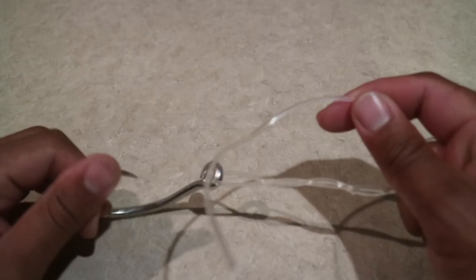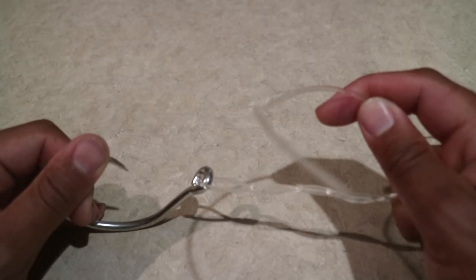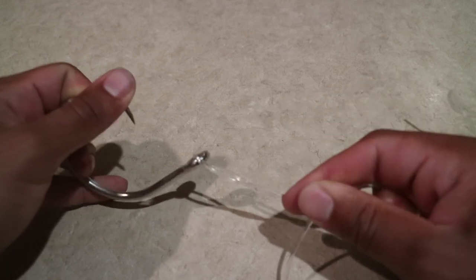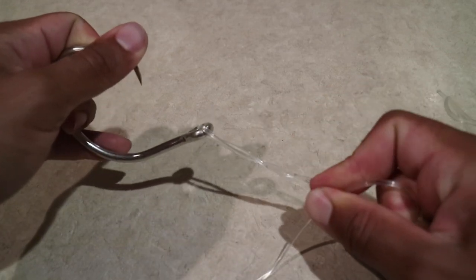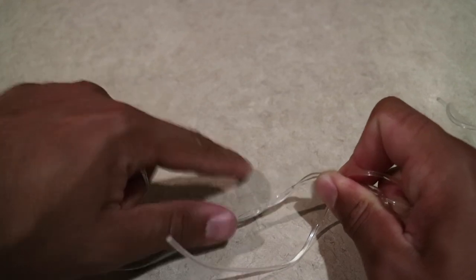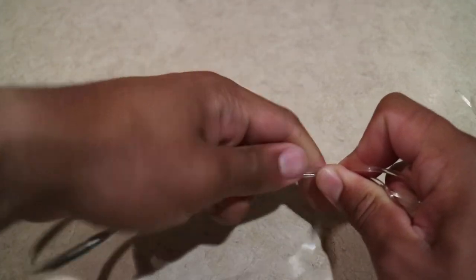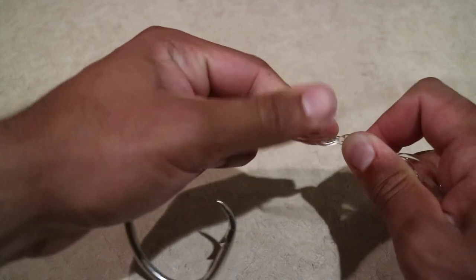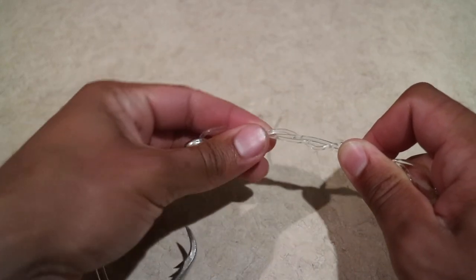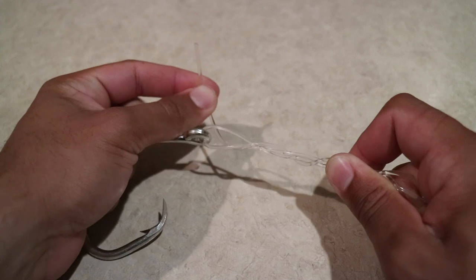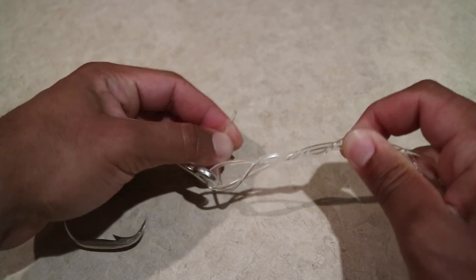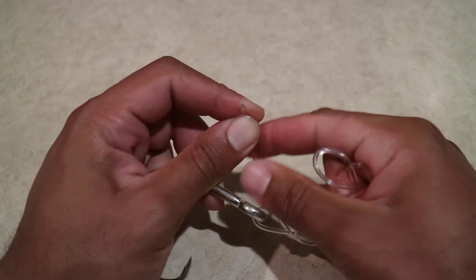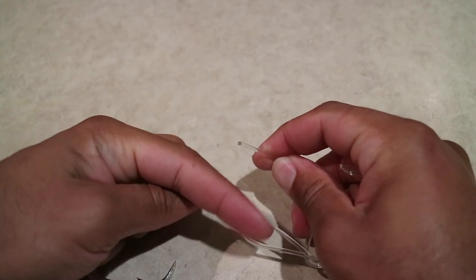Now what we're going to do is take this part and move it around the line three times. So one, two, three. And now we're going to take this part and then stick it through this hole.